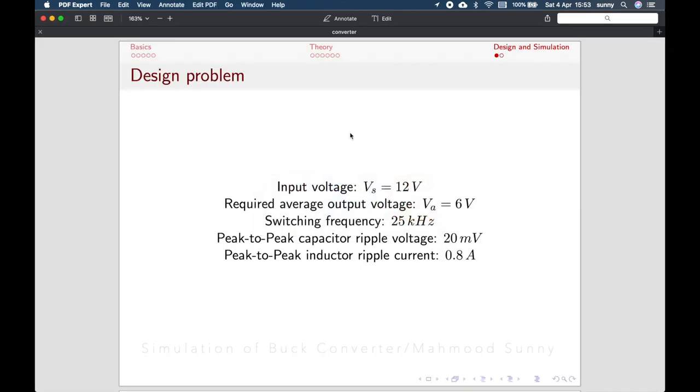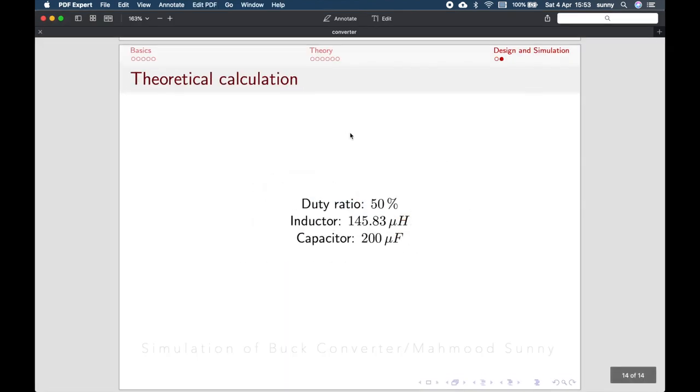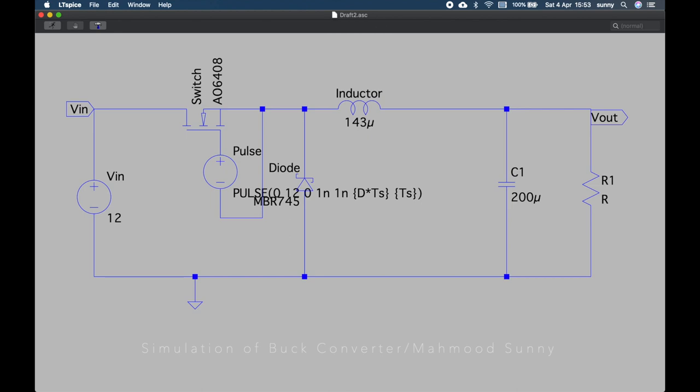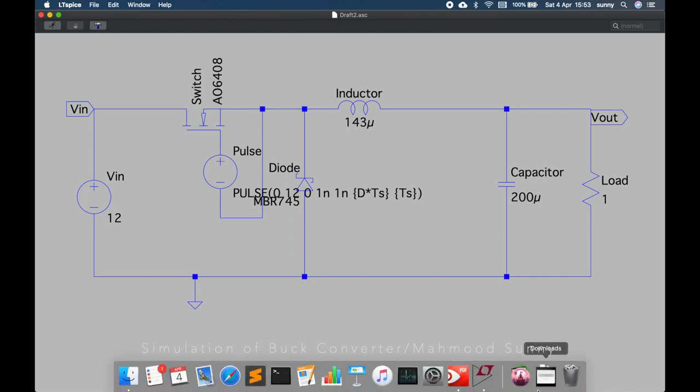Now capacitor. From our calculation, the capacitor value should be 200 micro, 200 micro. Series resistance. We can give it some series resistance. Let's give it a little 1 milliohm. Rename capacitor. Then load. We can keep it just 1 ohm.